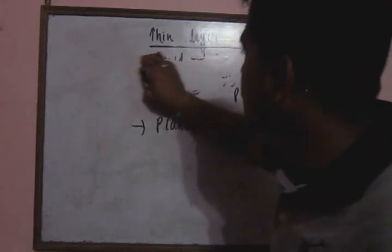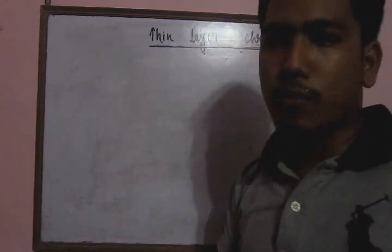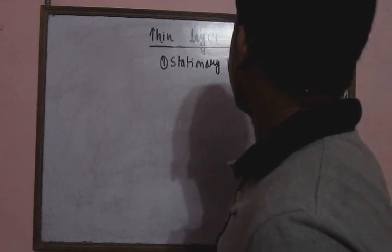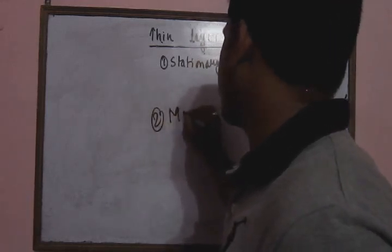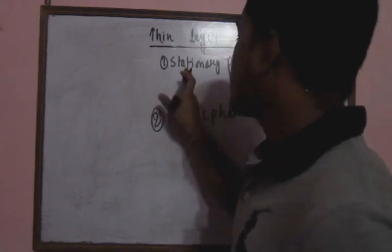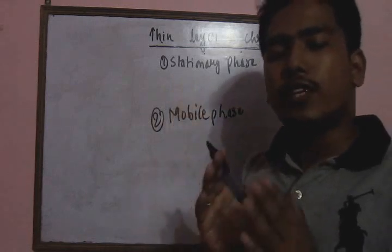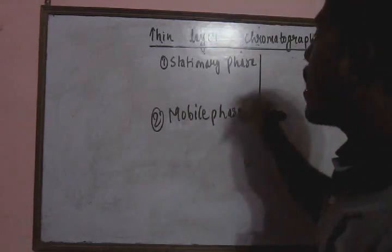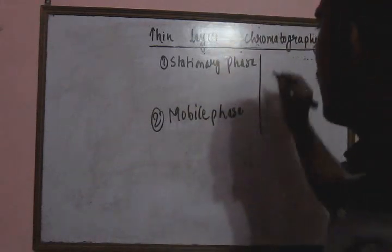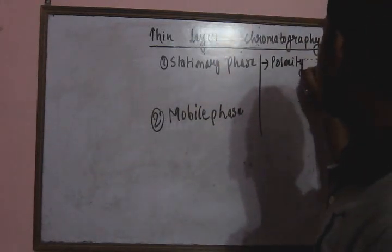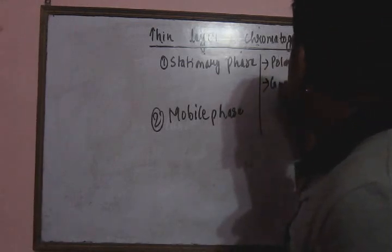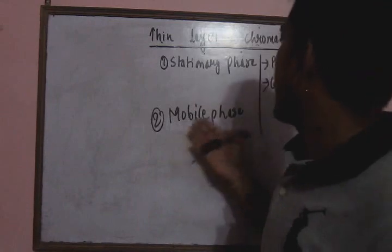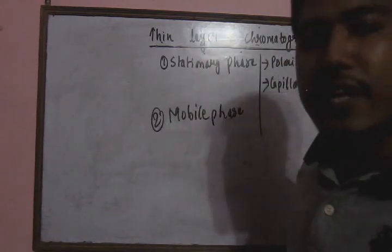In thin layer chromatography, there is a stationary phase and a mobile phase. These are responsible for the separation of compounds based upon polarity and capillary action. Due to the capillary action of the mobile phase and the polarity of the compounds, separation of the compounds occurs.